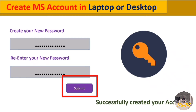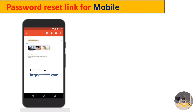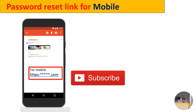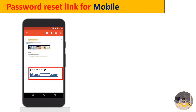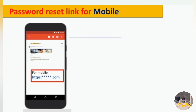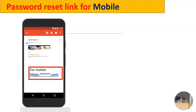Now let's see the procedure for mobile phones. Open the login details mail you received in your personal email on your mobile. They provide a specific hyperlink for mobile users to create your password. Click on that hyperlink, and you will be presented with some options — choose the ID Portal option.